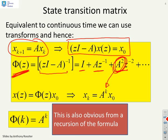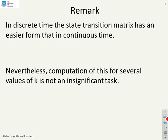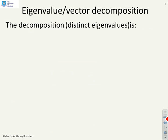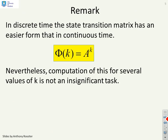Now, you could argue that this result is also obvious from a recursion of the following formula. If x_{k+1} = Ax_k, you do a recursion on that and you very quickly find you get A to the power k. In discrete time, the state transition matrix has an easier form than in continuous time. We can just write A to the power k and that was a lot easier to do than all the machinations we needed when using Laplace transforms or eigenvalue eigenvector decompositions.